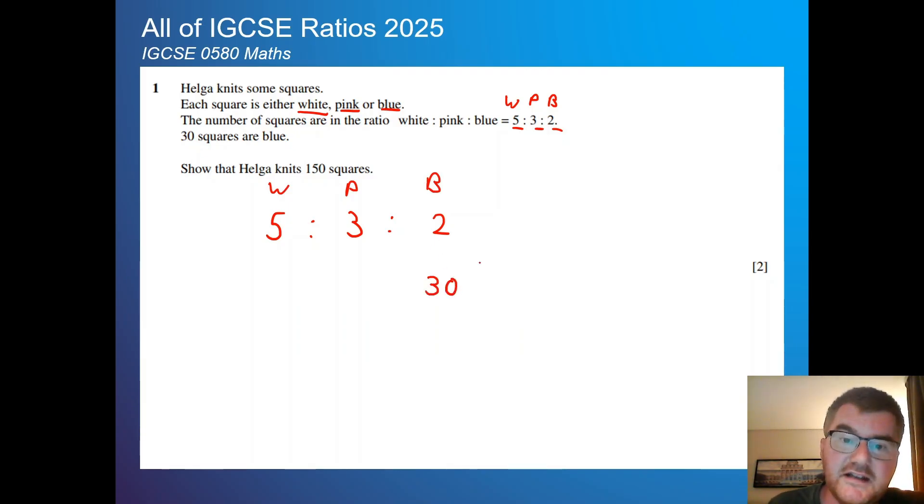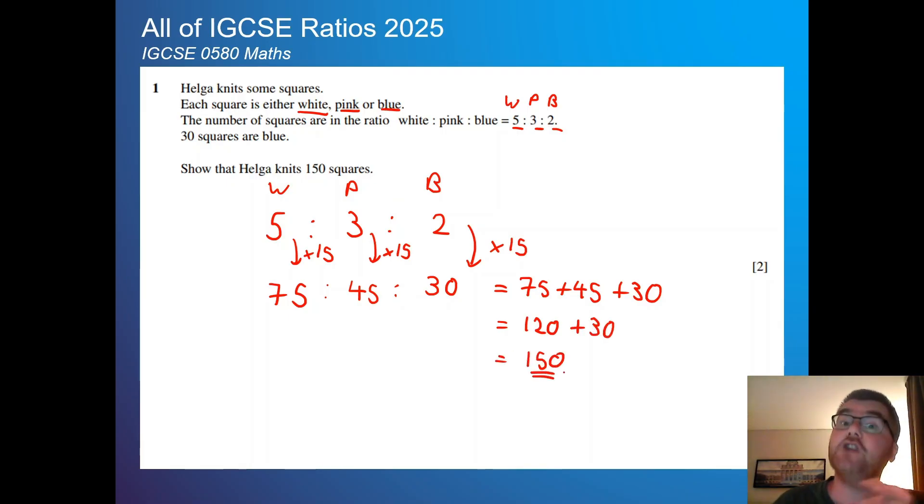So I'm going to write 30 underneath. And what do I multiply 2 by to get 30? Well, 15, and so I multiply by 15 both the white and the pink. 15 times 3, that's equal to 45. 15 times 5 is equal to 75. If I add together all these, so 75 plus 45 plus 30, I'll get to the answer of 120 plus 30, which is equal to 150.